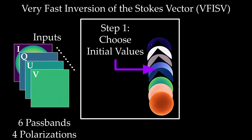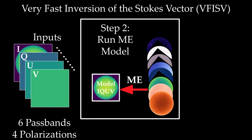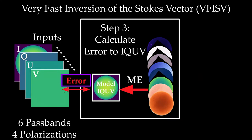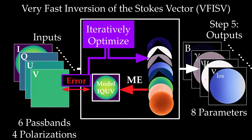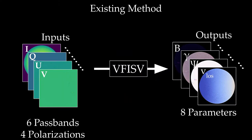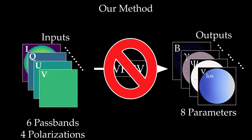We can do that, and that's what's currently done with something called the very fast inversion of the Stokes vector. Now, how this works is it chooses a set of initial values, models what IQUVs they should have produced, and then measures the error against what was really observed and iteratively optimizes this. So this iterative optimization has been able to flip and reverse the arrow. But unfortunately, it doesn't let us do it simply and quickly, and it can take up to 30 minutes, and be computationally expensive.